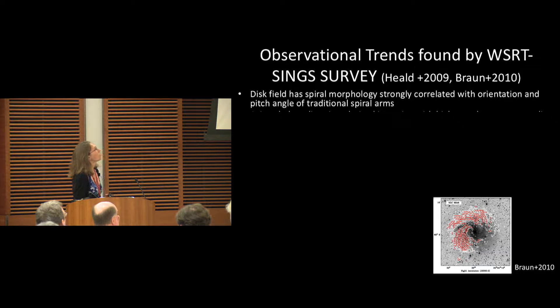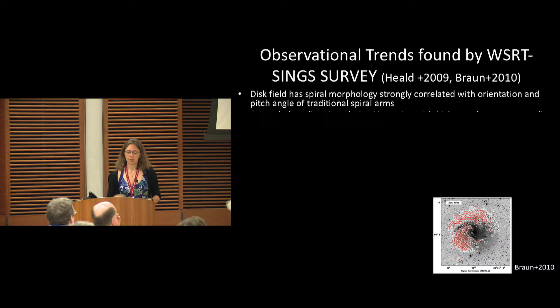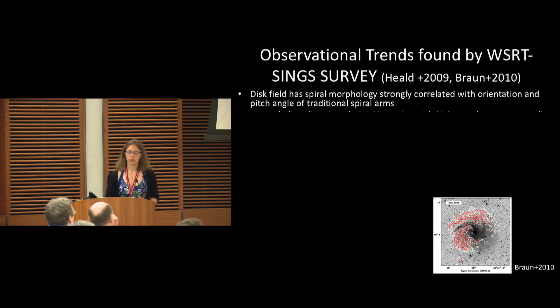What do we know locally? There's this great survey, Westerberg-Singh survey, that looked at 20 or so nearby spiral disk galaxies. What they saw is that the magnetic field or the polarization in the disk is correlated strongly with the orientation of the spiral structure.